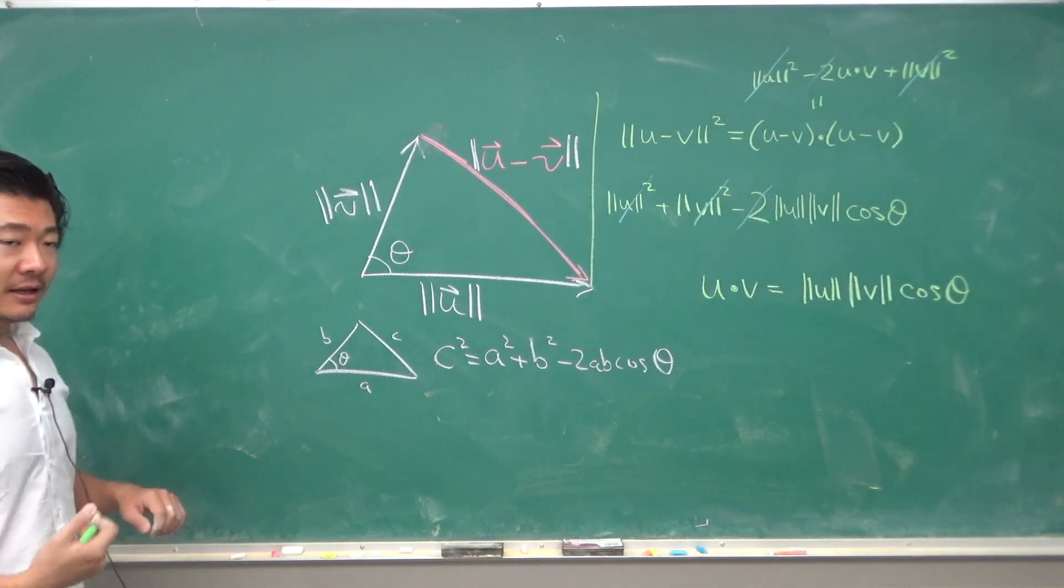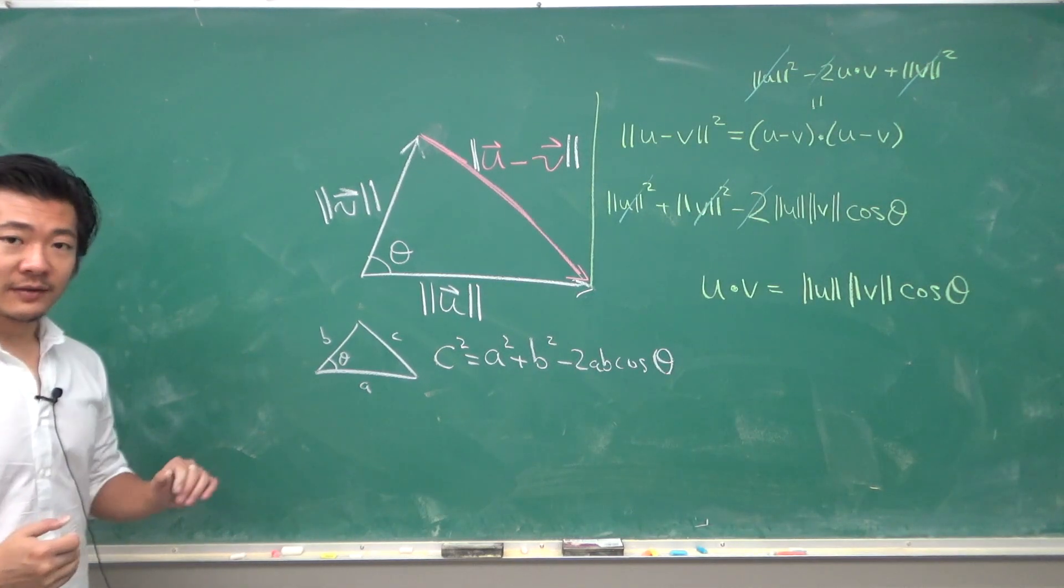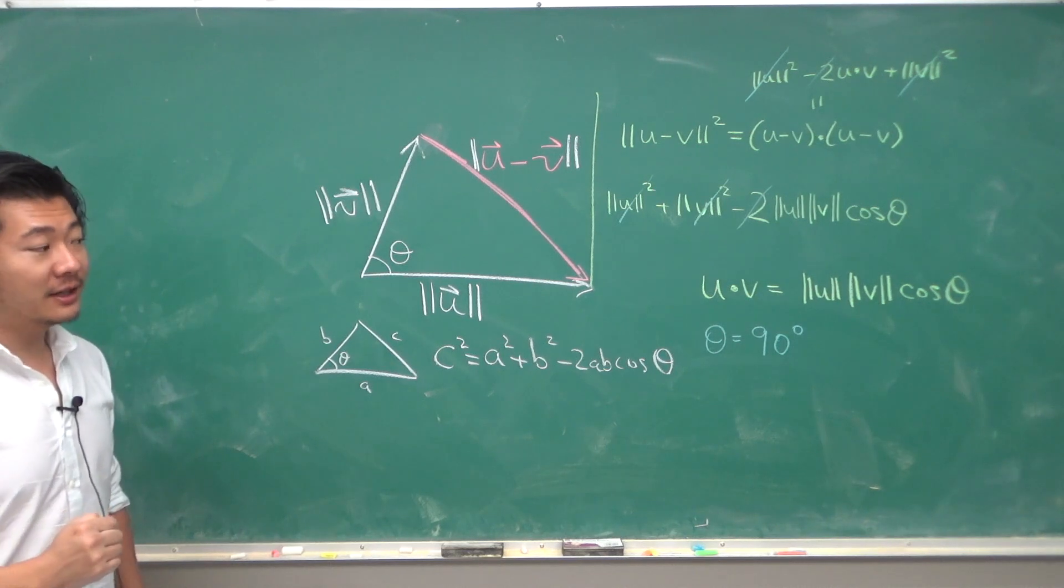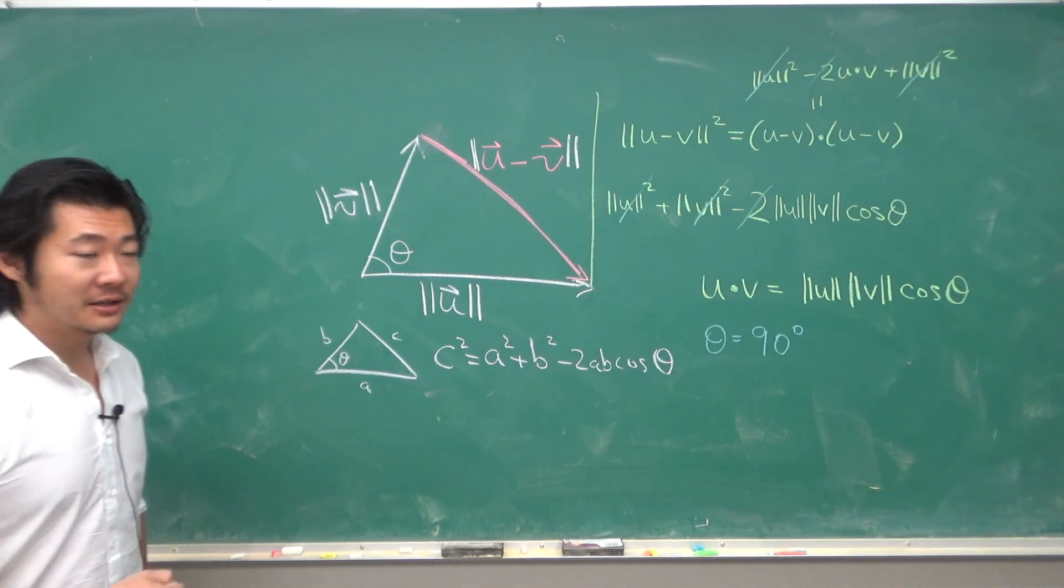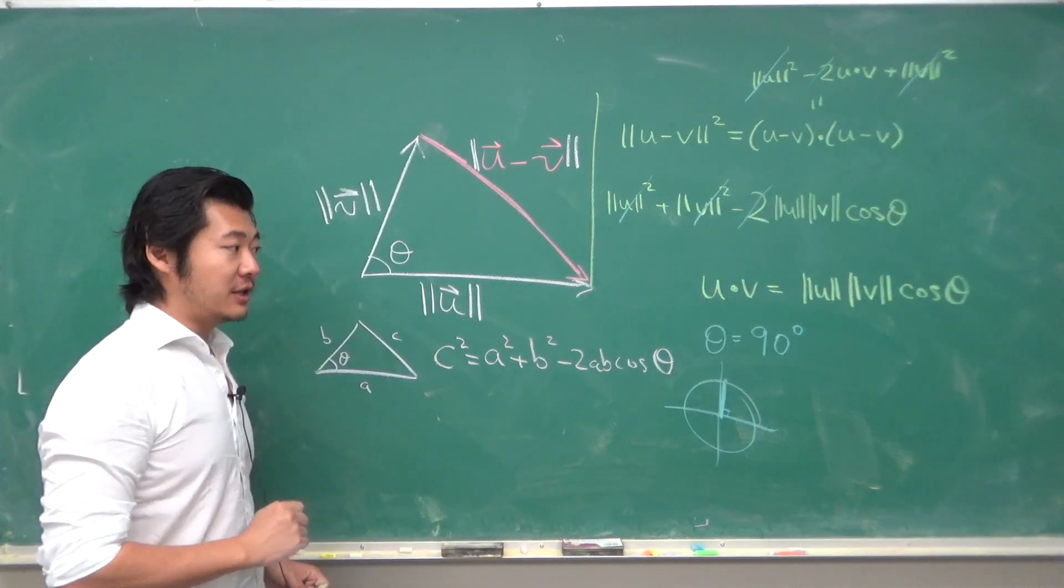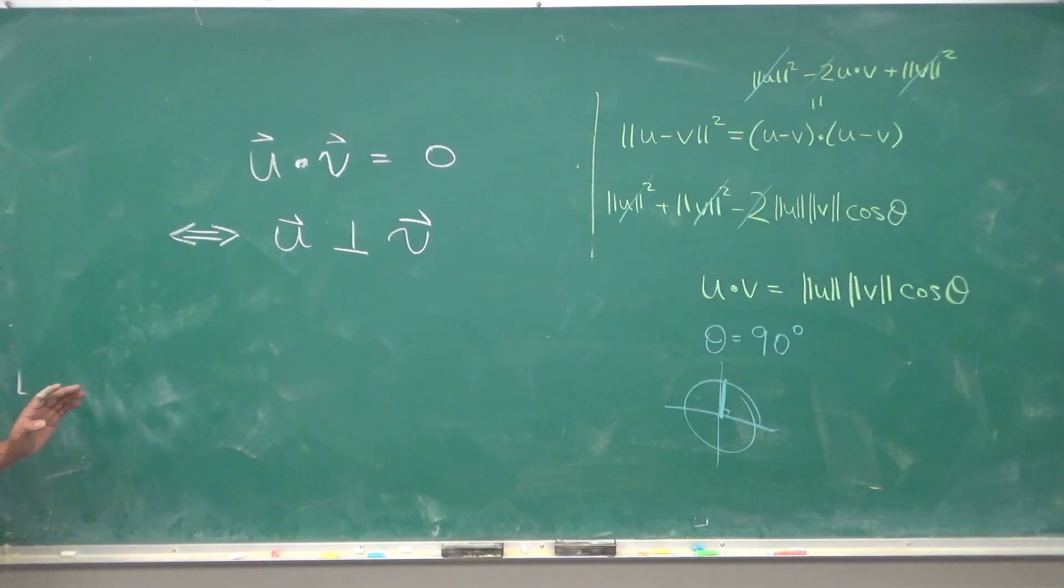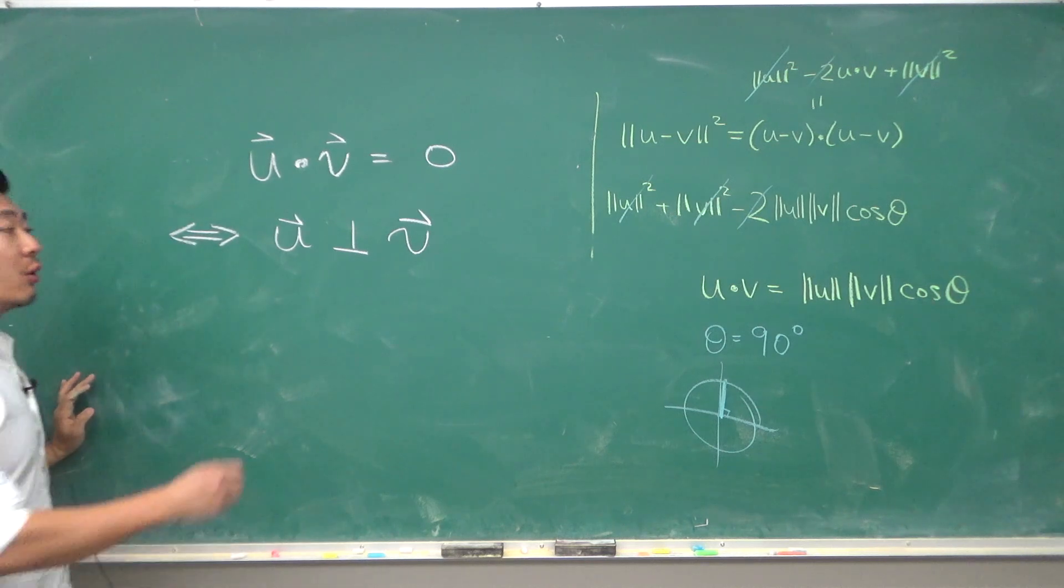So the dot product is telling us something about the angle between these two vectors. And for theta equals 90 degrees, well cosine of 90 degrees is 0, but that tells you that U dot V is 0. So when the dot product of two vectors is 0, that means they are perpendicular or orthogonal.